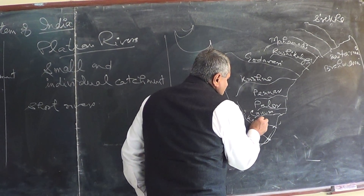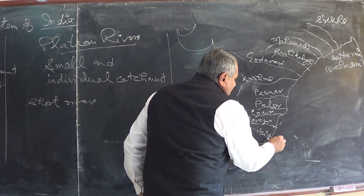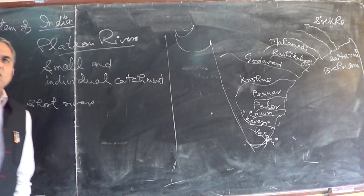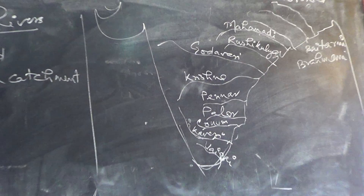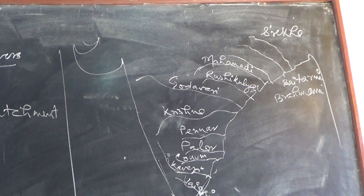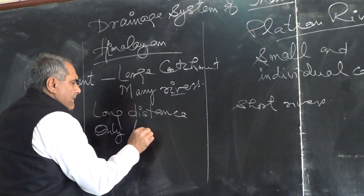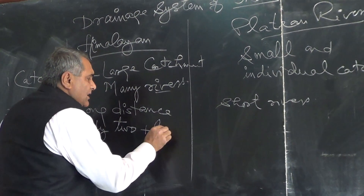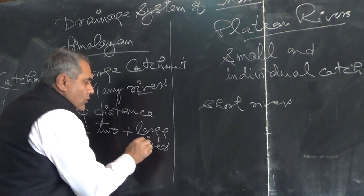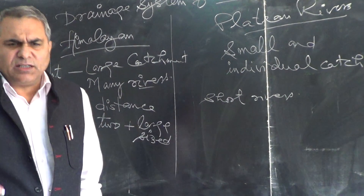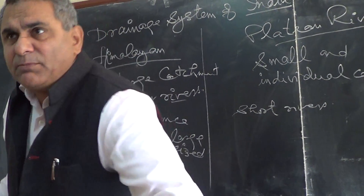There are so many rivers — all rivers make their own deltas. Only Himalayan rivers have large-sized deltas, and only two major deltas are formed by Himalayan rivers.